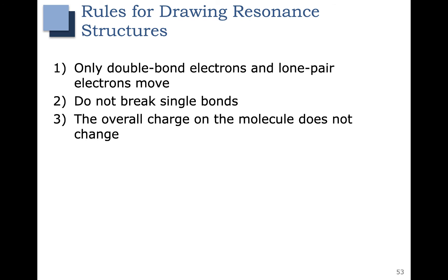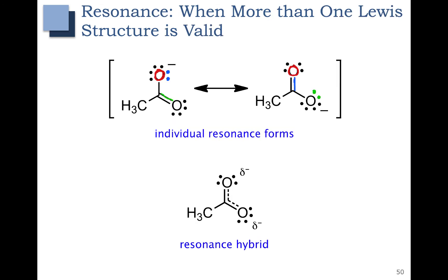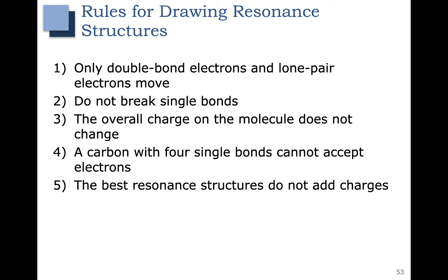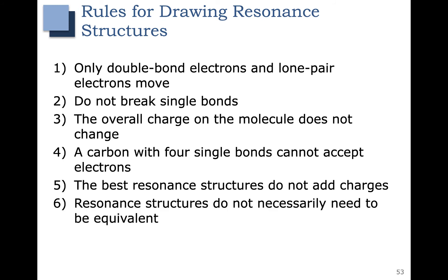Also notice that in resonance structures, the overall charge on the molecule does not change. Looking at our previous example, we had an overall formal charge of negative one on the left, and negative one on the right. We also have to remember that a carbon with four single bonds cannot have any more electrons - we must obey bonding rules and not give carbon more than its octet. The best resonance structures we draw do not add charges. Also, resonance structures don't necessarily need to be equivalent, as we will see in future examples.